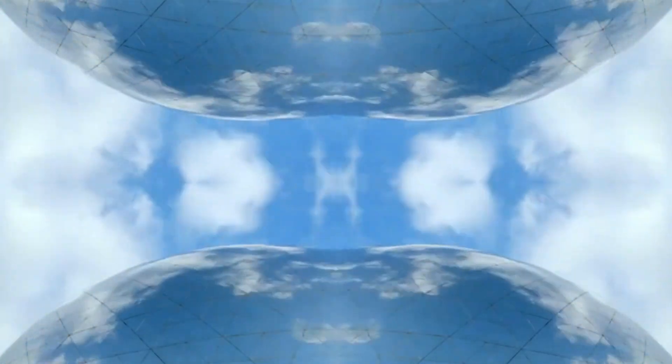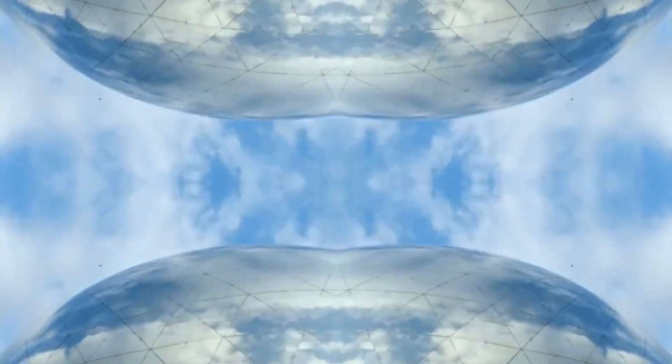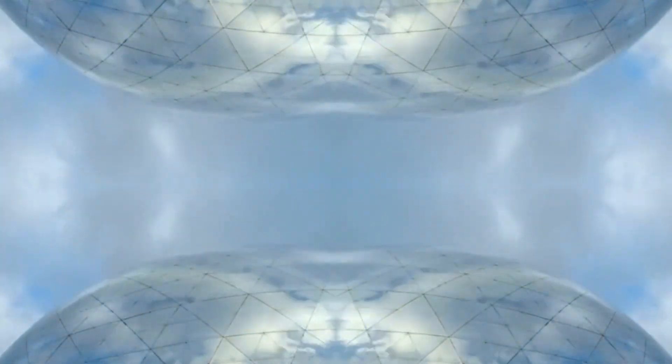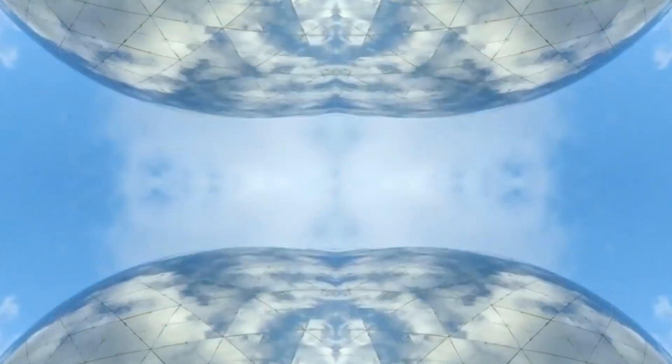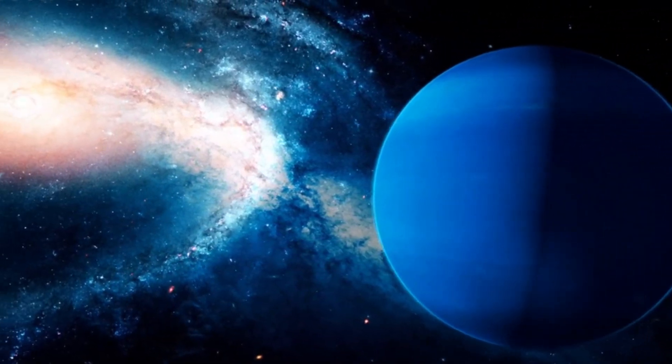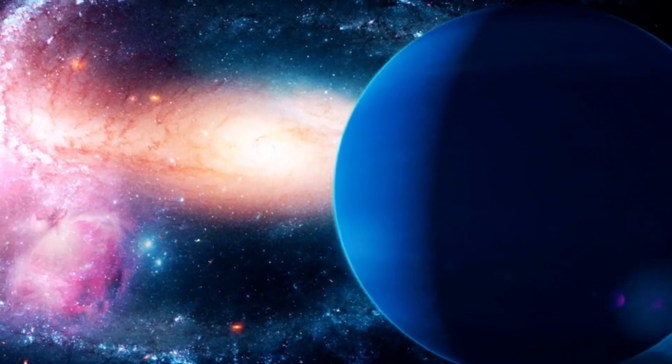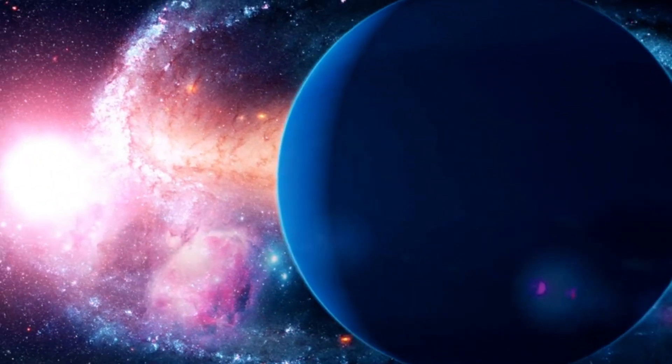But thanks to its shiny, metallic clouds of glass and titanium salt, LTT 9779b has a mirror shield that protects it, reflecting light away and preserving its atmosphere. This unique structure challenges scientists, as most planets this close to their stars are either large gas giants or small rocky planets, not Neptune-sized with an atmosphere.